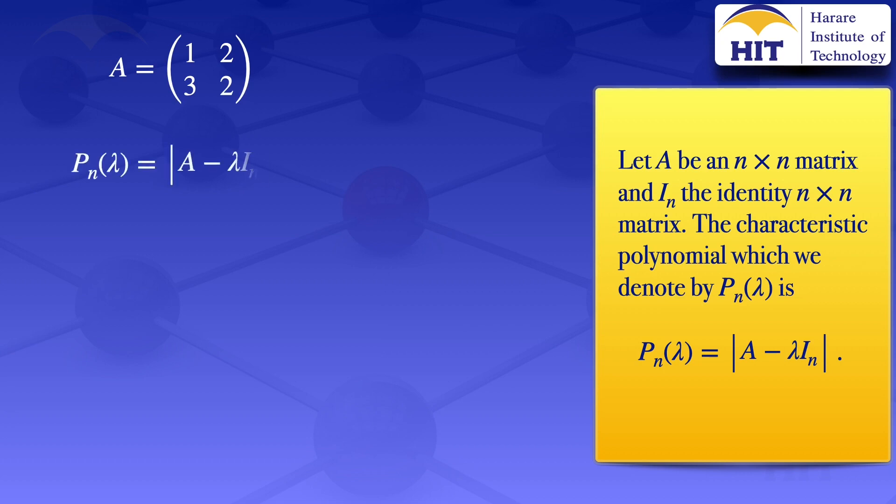Using that definition, the characteristic polynomial of matrix A equals the determinant of A minus lambda I_n. In this case, our A is a 2 by 2 matrix. Therefore, our identity matrix, which is n by n, our n is 2, since we are dealing with a 2 by 2 matrix. We'll use the identity 2 by 2 matrix. And when we substitute that into the formula above, we have the determinant of the matrix A minus lambda multiplied by the identity 2 by 2 matrix.